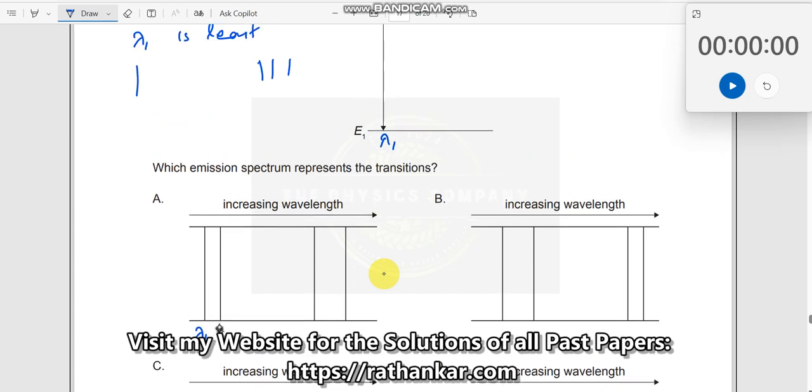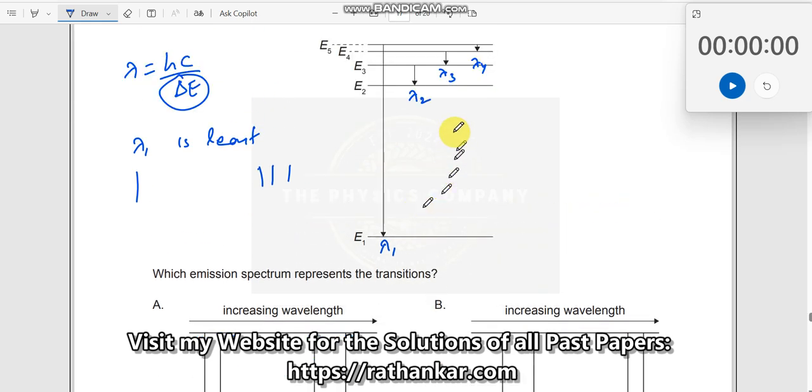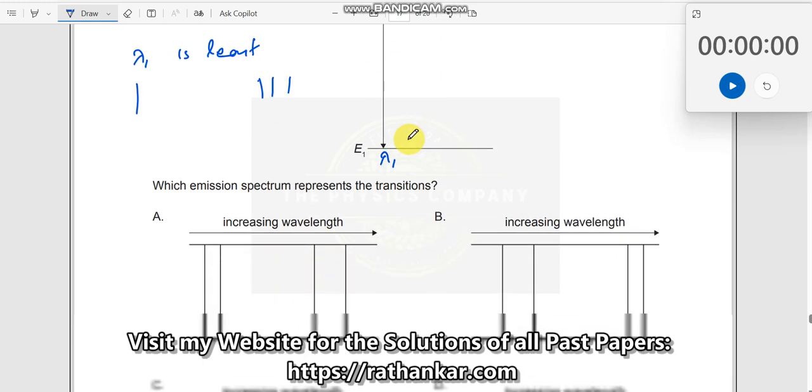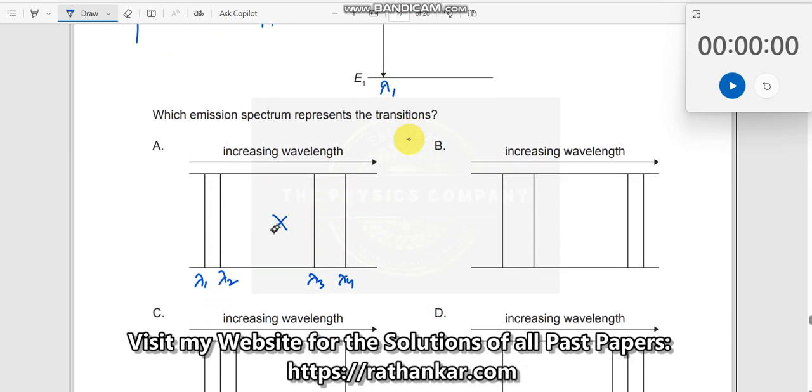If I call this as lambda 1, lambda 2, lambda 3, lambda 4—lambda 1 is least, we got this. Lambda 2 is closer over here, but is it closer like this? No. The energy gap here is much, much smaller, so lambda is much, much larger. Definitely, this is not the right answer.